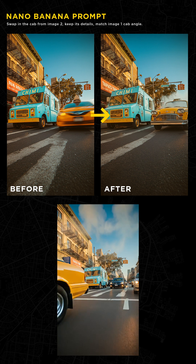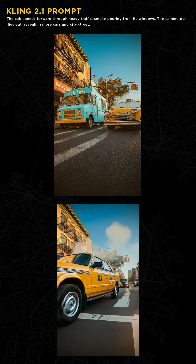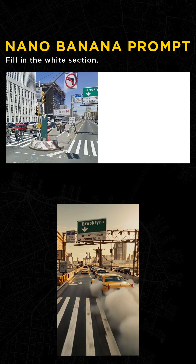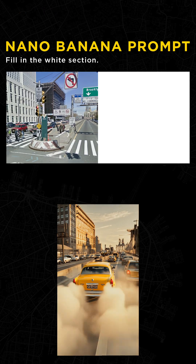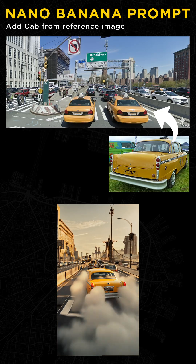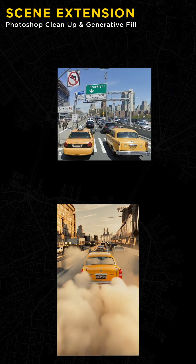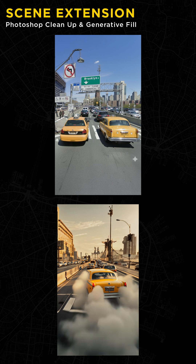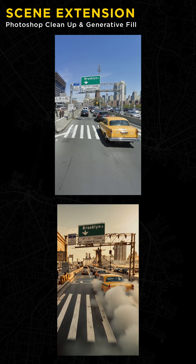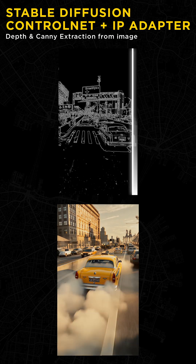I was able to bring that into Cling AI and animate it. Mid Journey is not good with locations, so I asked Nano Banana to fill in the white area, add cars, and place the cab in the image with this old school retro cab. I brought it into Photoshop, extended the top and bottom, and cleaned up the image a little bit more.